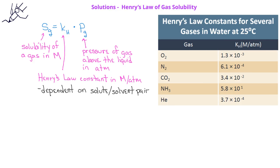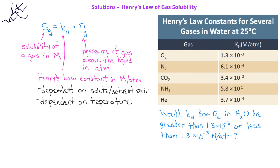The Henry's Law constant is also dependent on temperature, so that for the same gas and solvent — for example, oxygen and water — there will be a different Henry's Law constant at different temperatures. Based on your knowledge from a previous video discussing how temperature affects the solubility of a gas, would you expect the Henry's Law constant for oxygen in water at 30 degrees Celsius to be greater than or less than 1.3 times 10 to the negative third molarity per atmosphere? Go ahead and pause this video and see if you can answer this question.